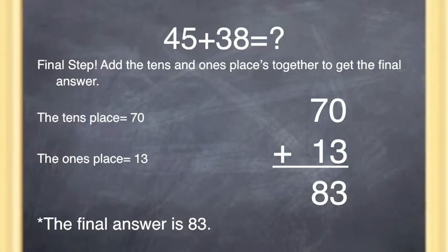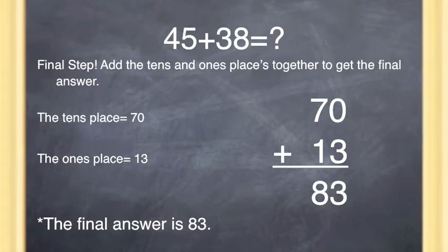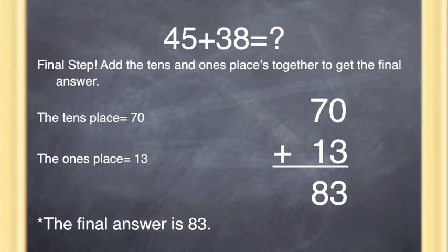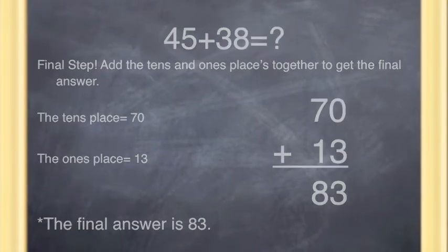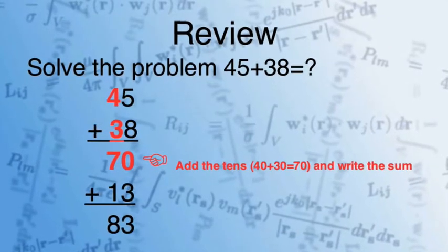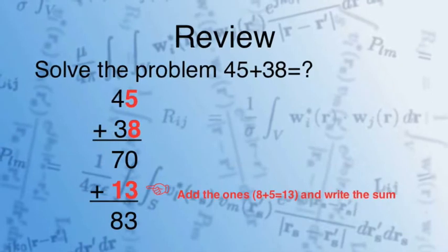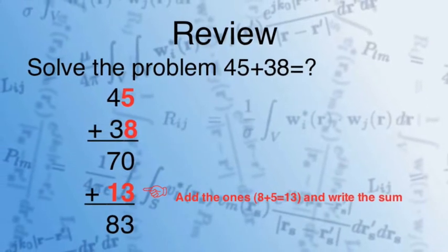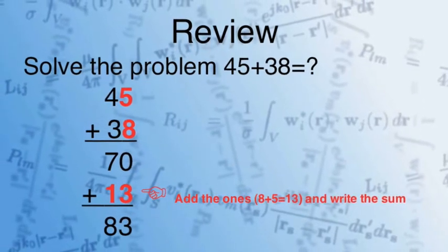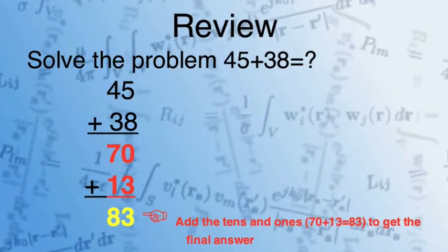Final step! You are going to add the sum of the tens place and the sum of the ones place together to get the final answer, which is 70 plus 13, giving you the grand total of 83. In review, 45 plus 38 equals 83. You added the tens, then you added the ones, which gives you the sum of 70 plus 13, which equals 83.